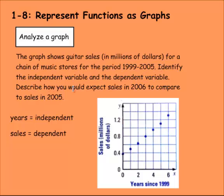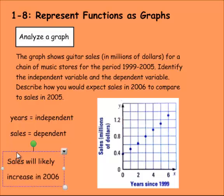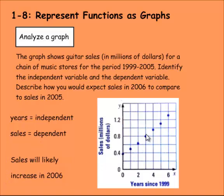Describe how would you expect sales in 2006 to compare to sales in 2005. So the year since 1999, this would be 2005 because 1999 plus 6 is 2005. This graph shows that there is a trend and the trend is pointing up. We see that sales, even though they were at 0.4 in 1999, they're at 1.3 million in 2005. So if we're going to say to 2006, we don't have to give an exact number. All we really have to say is that sales will likely increase in 2006. We can't say for certain because we can't predict the future. But it is a really good indication that sales will be increasing because this is the trend that this graph is going.